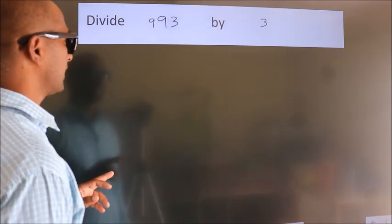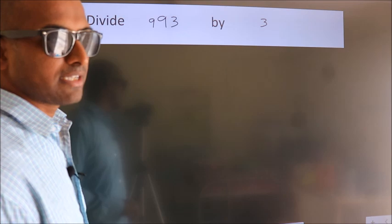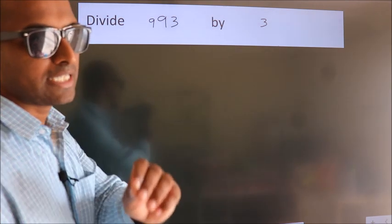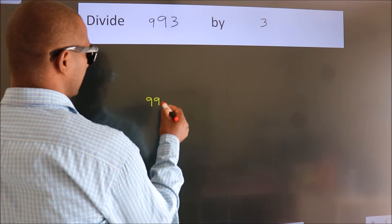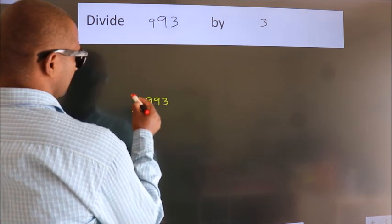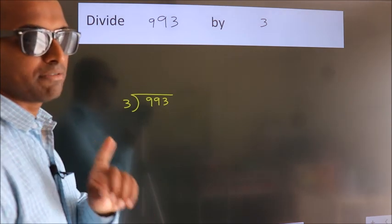Divide 993 by 3. To do this division, we should frame it in this way: 993 here, 3 here. This is your step 1.